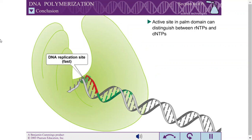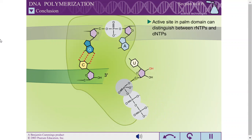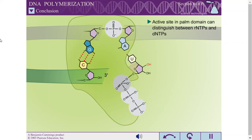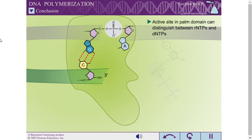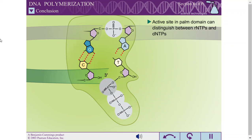The palm domain houses the active site for DNA synthesis and can distinguish between rNTPs and dNTPs. Two divalent metal ions in the palm domain are crucial for DNA polymerization activity.